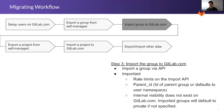Step three is importing the group to GitLab.com, which can be done through the API. A few important notes: be aware of rate limits on the import API. Also, the parent ID parameter is important — if not included, it will default to your user namespace. Additionally, internal visibility does not exist on GitLab.com, so imported groups will default to private if not specified.